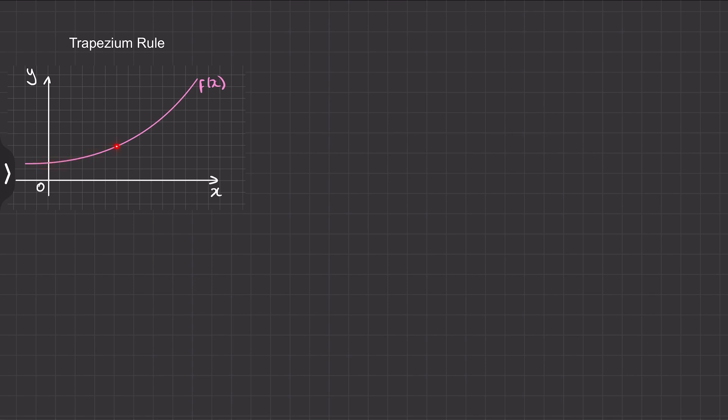So we have this function of x and we're going to estimate our final expression for the area under a curve between this point which we'll call a and this point which we'll call point b.